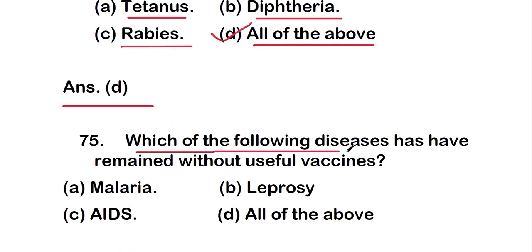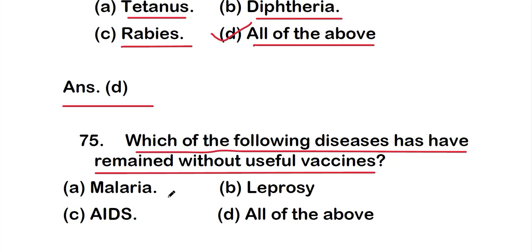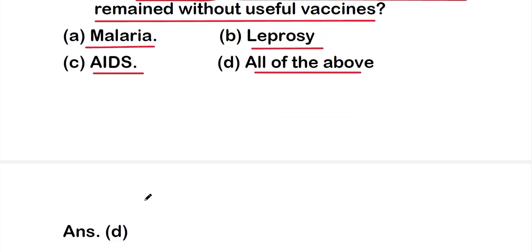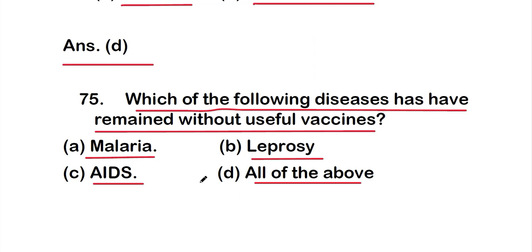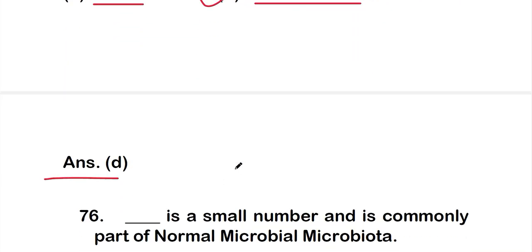Question 75: Which of the following diseases have remained without useful vaccines? Options: A: malaria, B: leprosy, C: AIDS, D: all of the above. The right answer is option D — all of the above. Malaria, leprosy, and AIDS have all remained without useful vaccines.